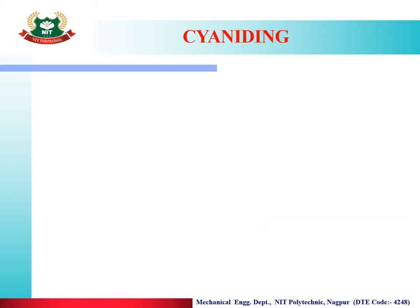The last surface treatment process is cyaniding. Cyaniding is a combination of carburizing and nitriding. In cyaniding, both carbon and nitrogen are diffused onto the surface of the steel, so that nitrides and carbides are both formed, making the upper surface layer hard.